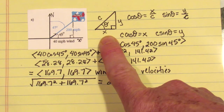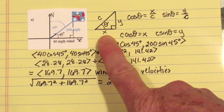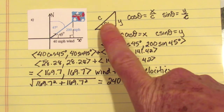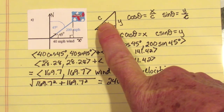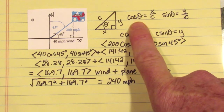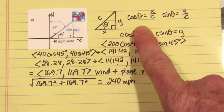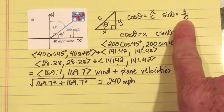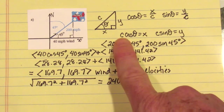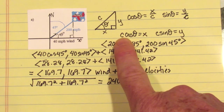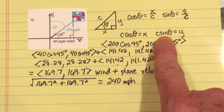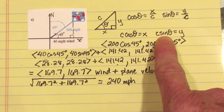If you measure the angle from the x-axis, then x is the adjacent side, y is the opposite side, and the hypotenuse is the magnitude of your vector. Using the definition of cosine — cosine equals adjacent over hypotenuse, sine equals opposite over hypotenuse — the x coordinate will be the hypotenuse times cosine of the angle measured from the x-axis, and y will be the hypotenuse times sine of that angle.